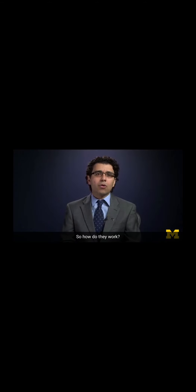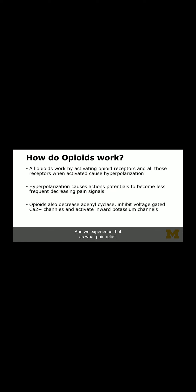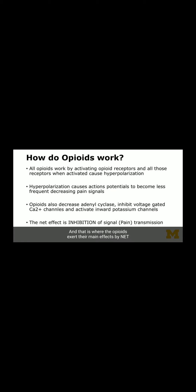All opioids work by activating opioid receptors. When they activate these receptors, they cause hyperpolarization of those nerve signals. This hyperpolarization makes it possible for the signals to decrease in frequency, and we experience that as pain relief. The mechanism involves decreasing adenyl cyclase, inhibiting voltage-gated calcium channels, and activating inward potassium channels. The net effect is inhibition — opioids inhibit throughout the central nervous system, and that is where they exert their main effects.